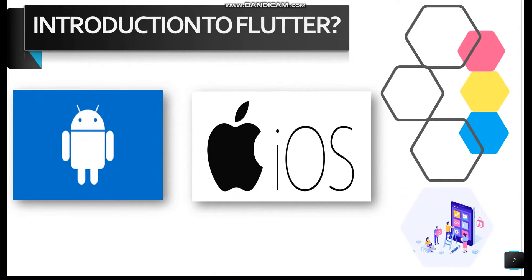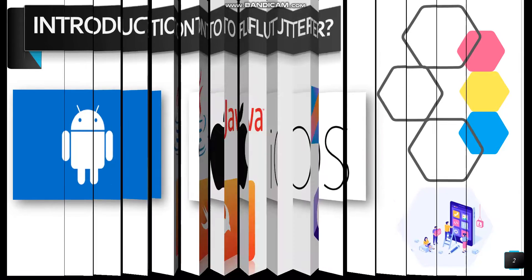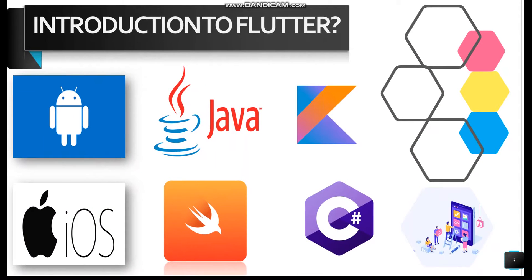As we all know, there are two different types of apps — Android and iOS. Android is developed by Google and iOS is developed by Apple. To build an Android app, developers need to learn a language compatible with Android, like Java or Kotlin. To develop an iOS app, developers need to learn a language compatible with iOS, like Swift or C#. This is a big problem because developers need to learn two different languages for a single application.